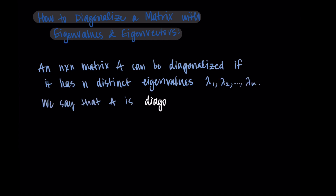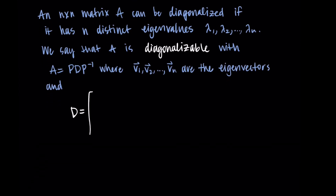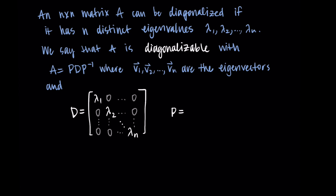In this case we say that A is diagonalizable with A equal to P D P-inverse, and P and D are specifically written as the following. If we let V1 through Vn be the eigenvectors, then D is the matrix with the eigenvalues on the diagonal — lambda 1 through lambda n on the diagonal and zeros everywhere else. P has columns equal to the eigenvectors.